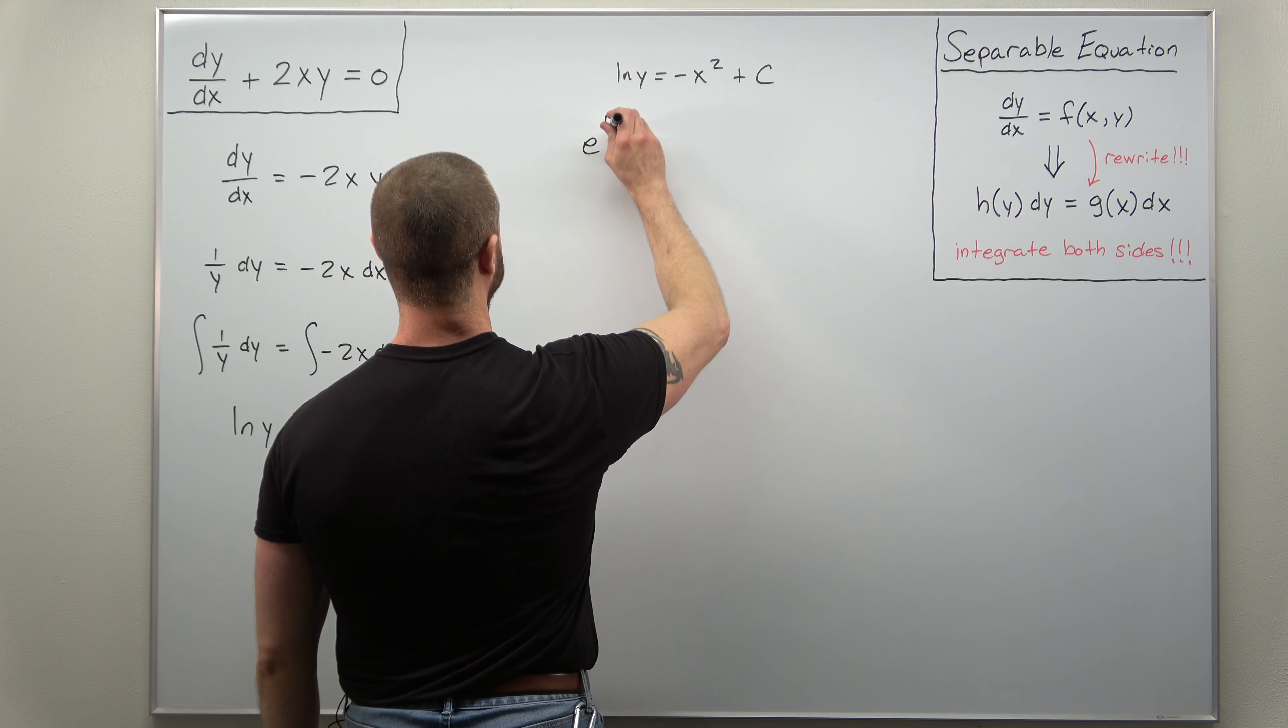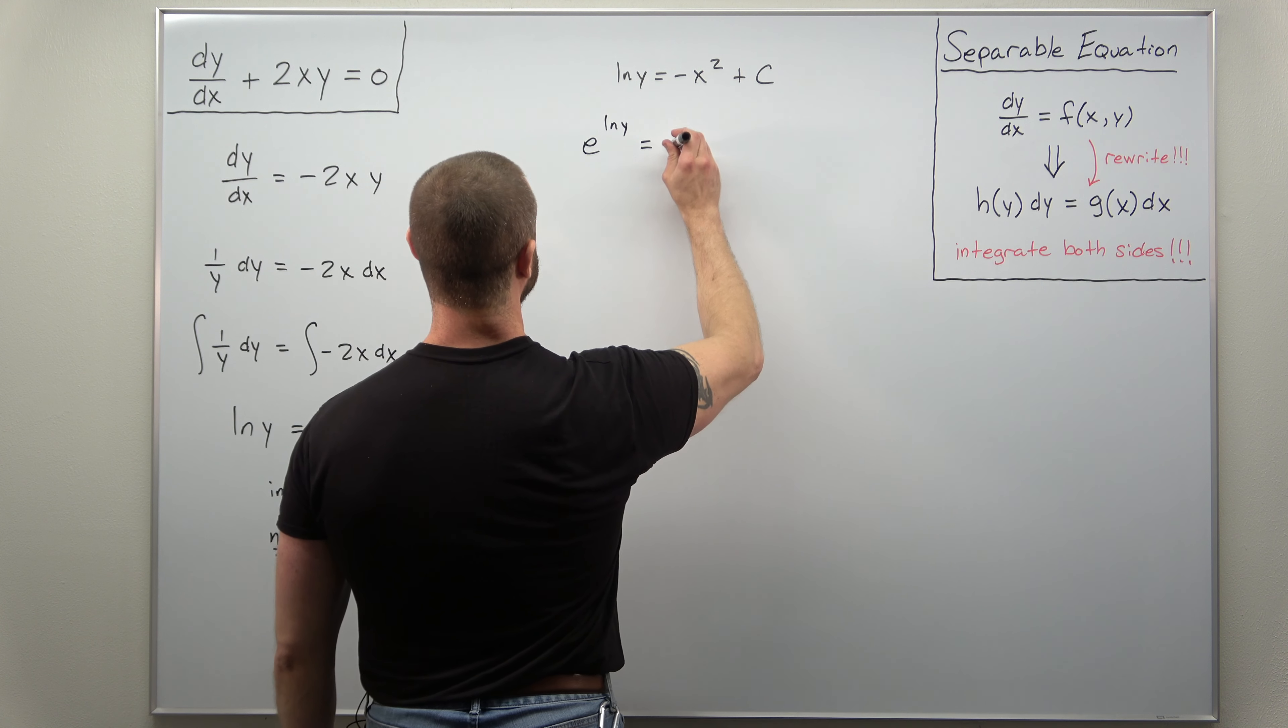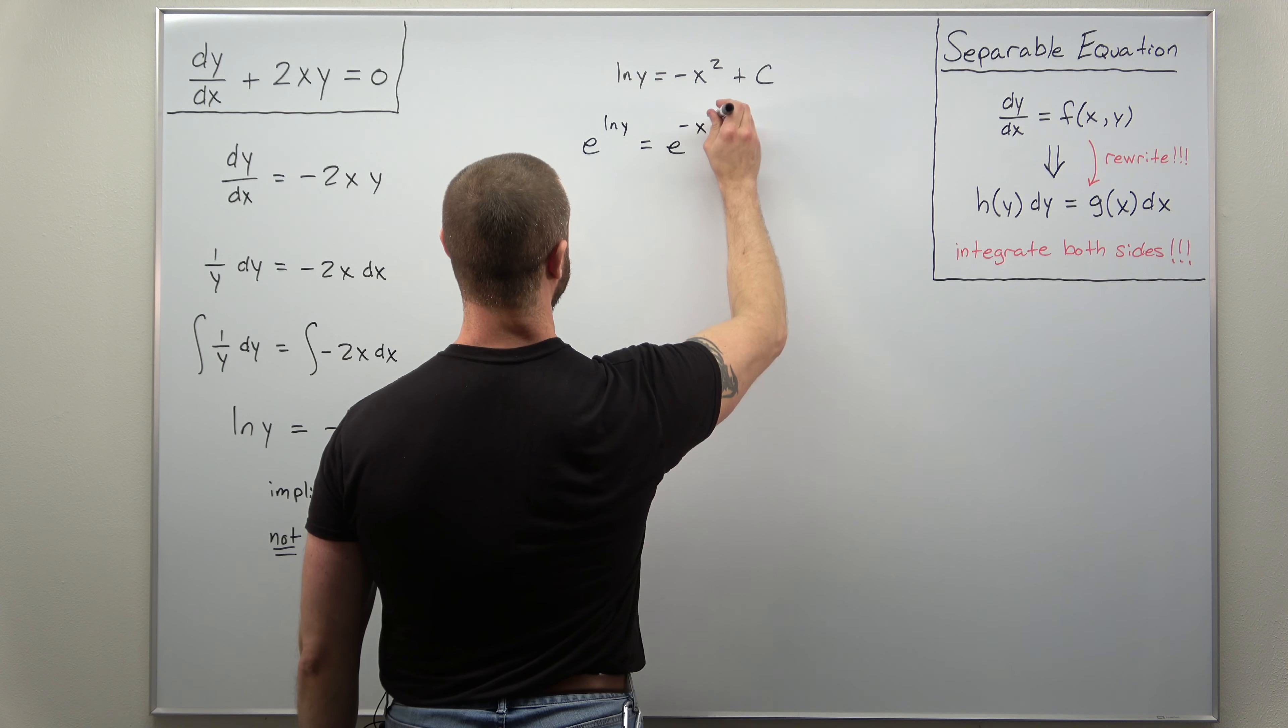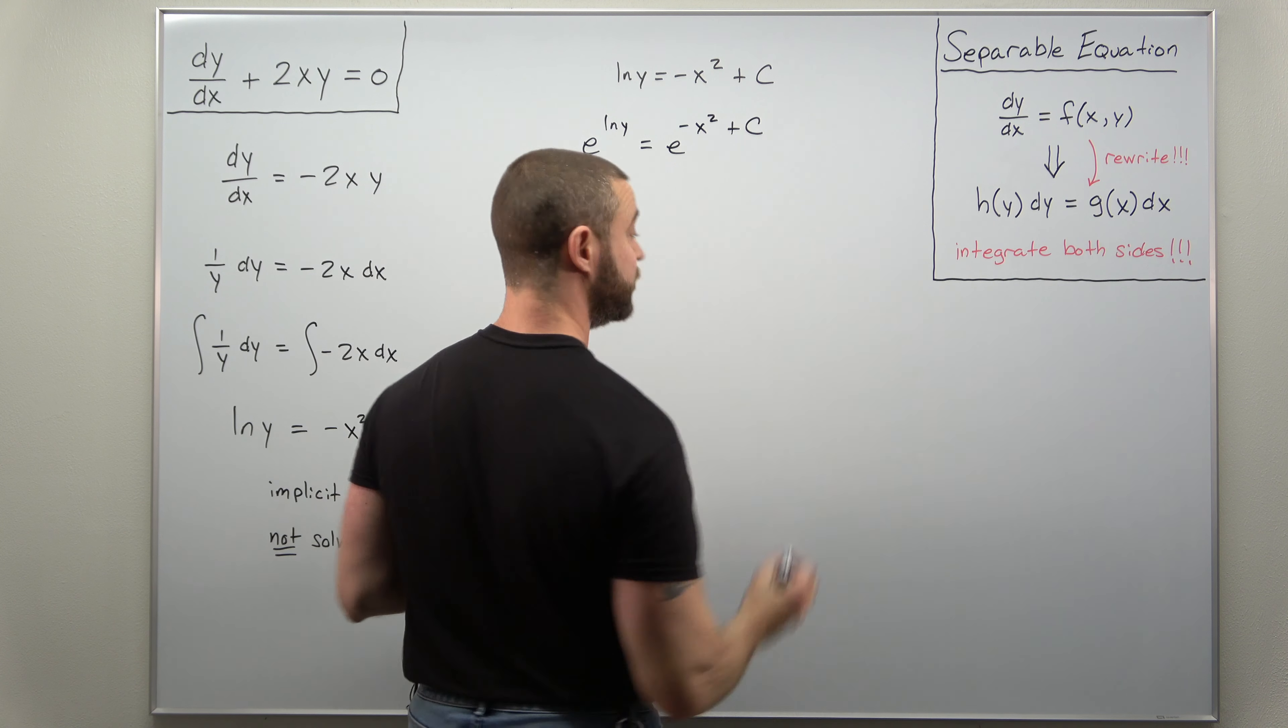So we'll get e to the natural log of y equals e to that whole right side negative x squared plus c.